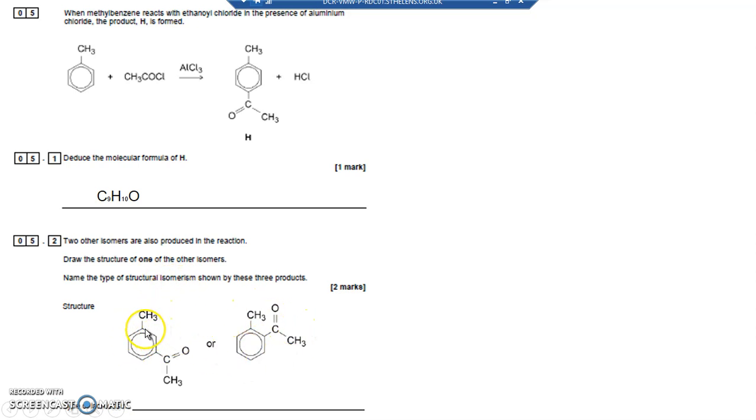There's position where I've changed the position of something. Well I've changed the position of this ethanoyl group here from carbon number 1, 2, 3 to carbon number 2. So it's definitely position. It's not a functional group because I've not changed any of the functional groups. I've still got an ethanoyl group here and a methyl group here. So it's definitely position.